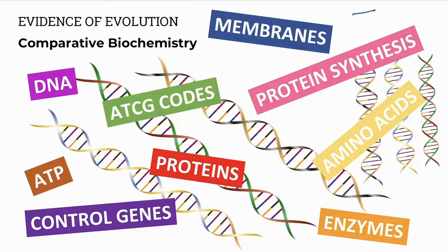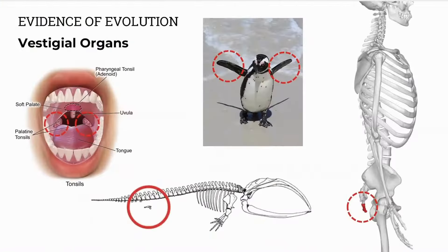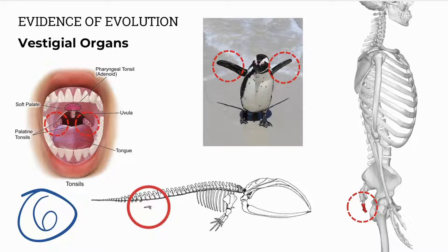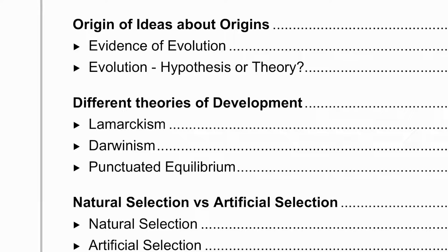Number five is comparative biochemistry, where we compare the chemicals in different living things. Whether you're an amoeba, or an ape, or an algae, you have the same chemical structure in your DNA, the same chemical structure of membranes, etc. Number six is vestigial organs. These are known as evolutionary remnants. Darwin considered them useless in modern species, but evidence of structures present in ancestral species.